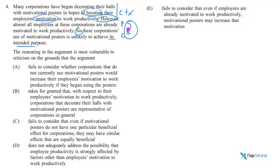This is called anticipating the correct answer choice, and you have to be able to do this. Especially for a question like number four — in the first ten questions of any LR set, there are going to be six or seven that are really easy, and you just have to be able to sort of fly through them. So let's consider the answer choices.